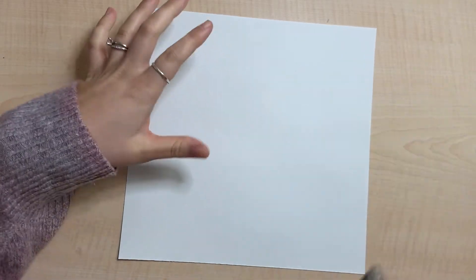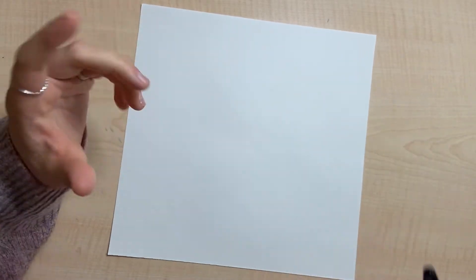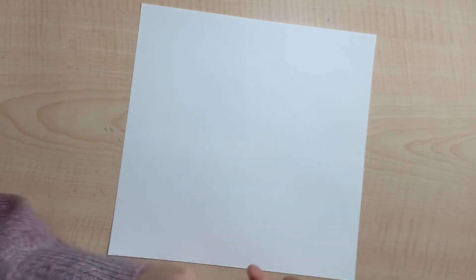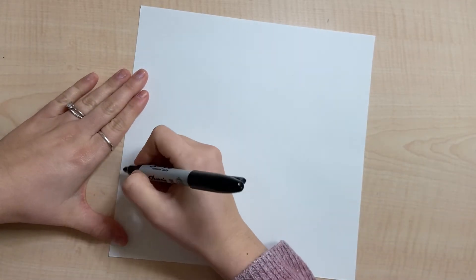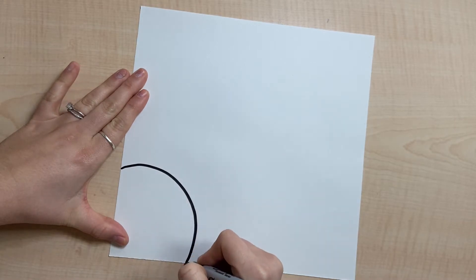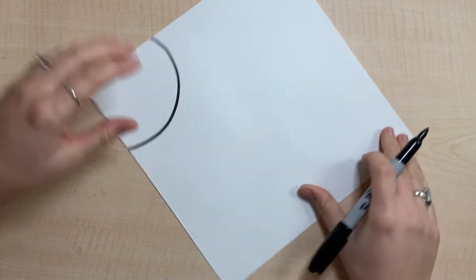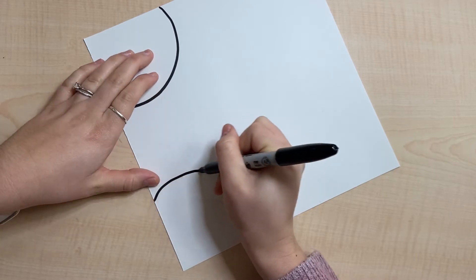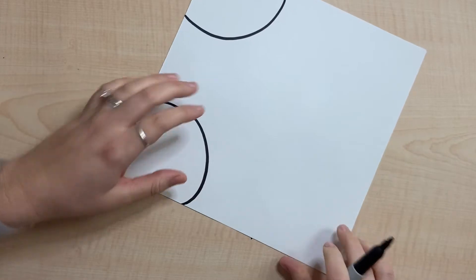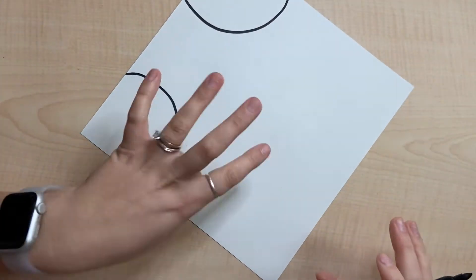Start with a piece of paper. I made mine a square because I just wanted to draw mine as a square, but you can use whatever size paper you have. We're going to draw in the corners the body of our snow people.